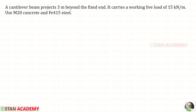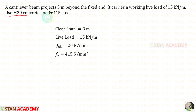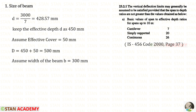Hello everyone, today we are going to design a cantilever beam. A cantilever beam projects three meters beyond the fixed end; the clear span is given as three meters. It carries a working live load of 15 kilo Newton per meter. We will use M20 concrete and Fe 415 steel, so fck is 20 and fy is 415.